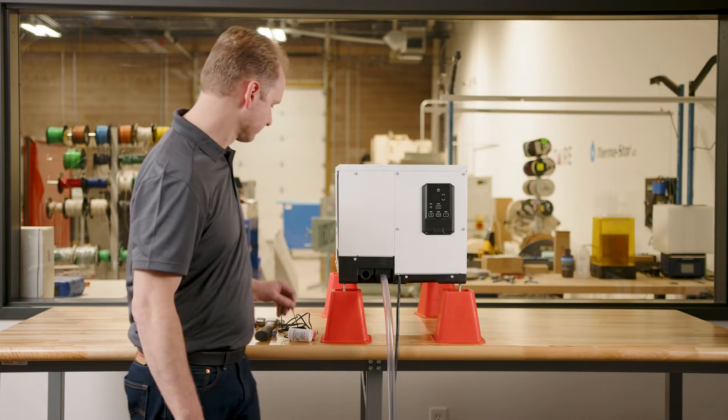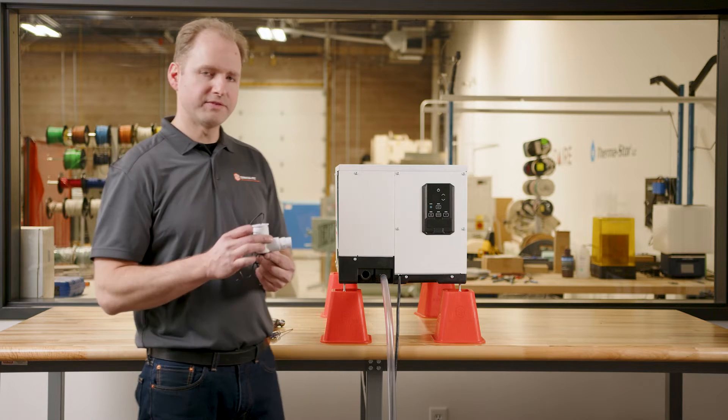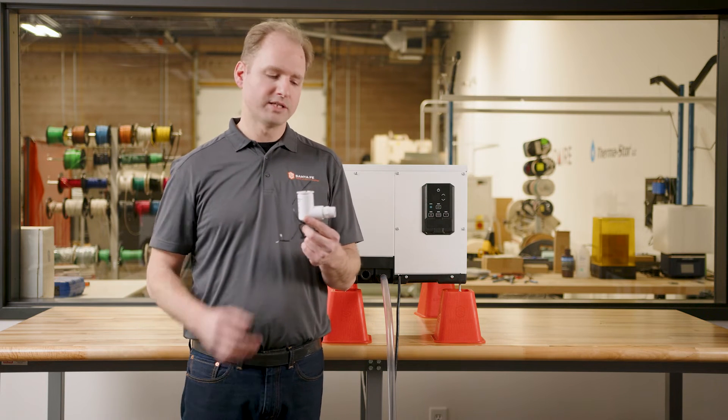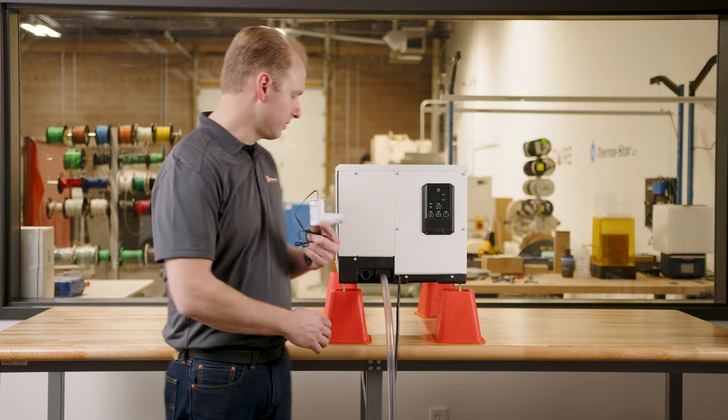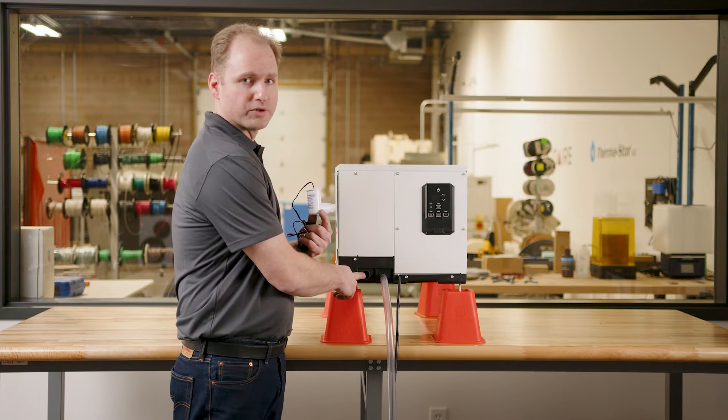In this next step we'll install a safety float switch. If the main drain line becomes plugged, the safety float switch will turn the unit off, preventing flooding. The safety switch we're using here has a three-quarter inch thread that we'll thread into this secondary drain port.